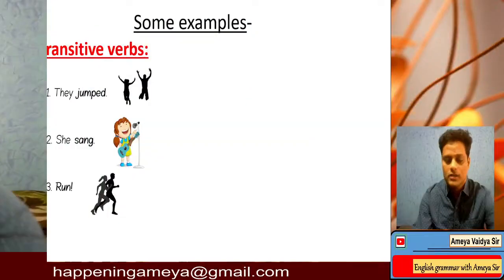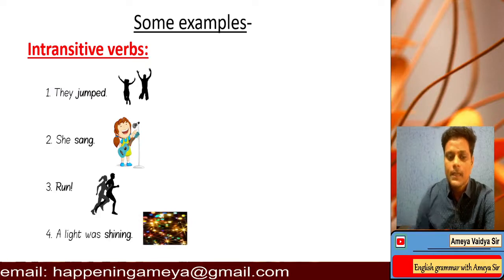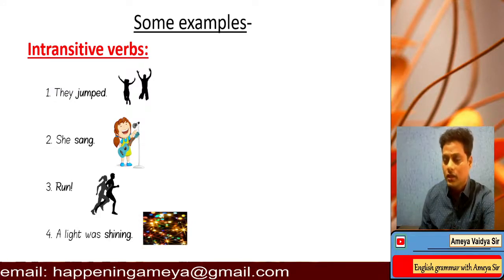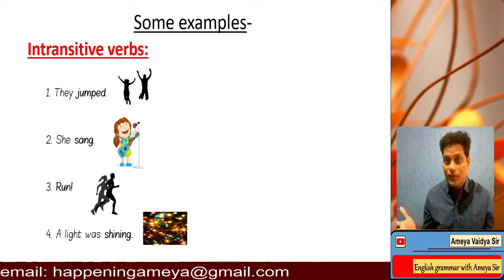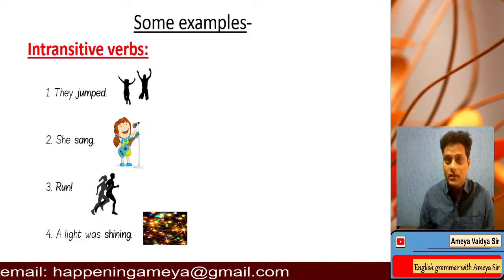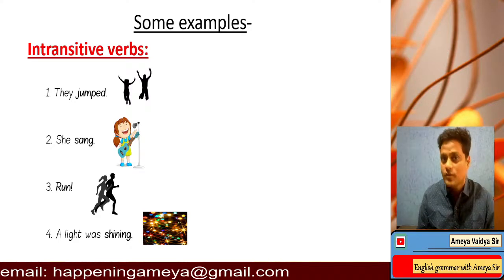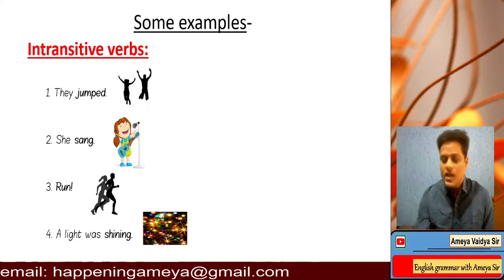Let's talk about some more intransitive examples: 'A light was shining.' Shining what? You don't need that — 'a light was shining' is complete by itself. These are examples of intransitive verbs — they do not need an object. Transitive verbs need an object.